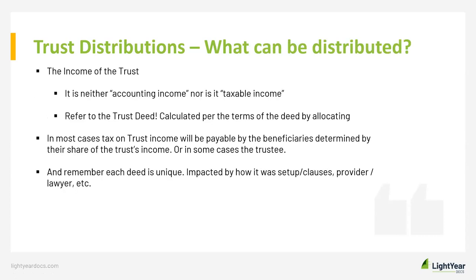What can be distributed is the income of the trust — and that's neither accounting income nor taxable income; it is the income of the trust as defined by the trust deed, calculated per the clauses within that deed. In most cases, tax on trust income will be payable by the beneficiaries as income is distributed to them, at each beneficiary's tax rate — whether individual, company, etc. This is determined by each beneficiary's share of the trust income, as resolved by the trustee each financial year.